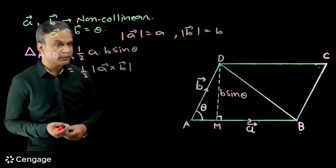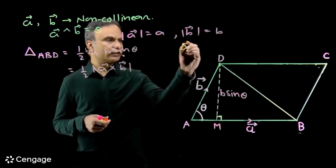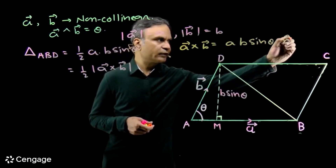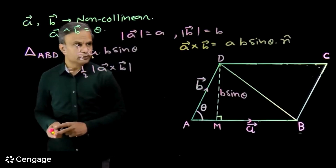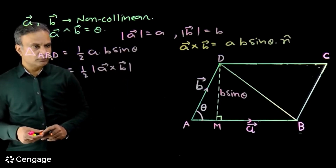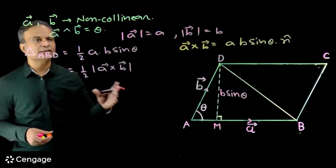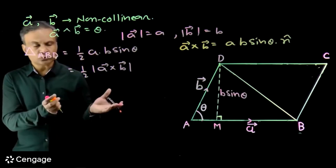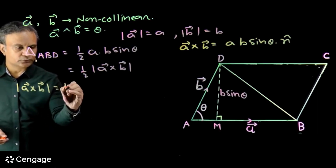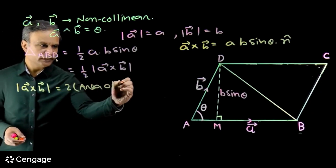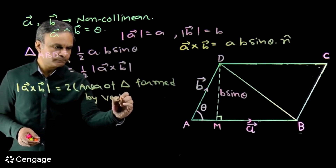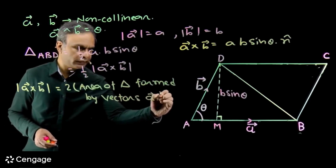Now, A cross B equals A times B sin theta times n-cap, the unit vector perpendicular to the plane of vectors A and B. So modulus of A cross B equals A times B times sin theta. Therefore, modulus of A cross B is twice the area of the triangle formed by these two non-collinear vectors. Modulus of A cross B is equal to twice the area of the triangle formed by vectors A and B.